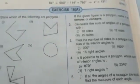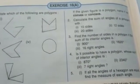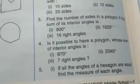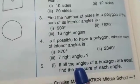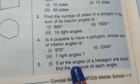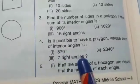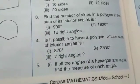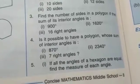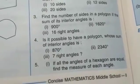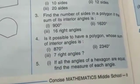Good afternoon dear students. Today we have to continue the questions of exercise 16a and we have to start with question number 4. See question number 4: is it possible to have a polygon whose sum of interior angles is 870 degrees? There are 3 subparts. Subpart 1: 870 degrees. We have to check whether a regular polygon is possible or not when the sum of interior angles is 870 degrees.